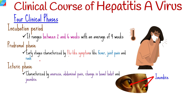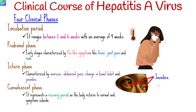The third phase is icteric, characterized by anorexia, abdominal pain, change in bowel habit, and jaundice. The fourth phase is convalescent, representing a recovery period as the body returns to normal and symptoms subside. Symptoms like malaise may last for months.